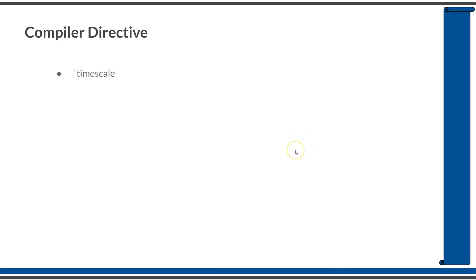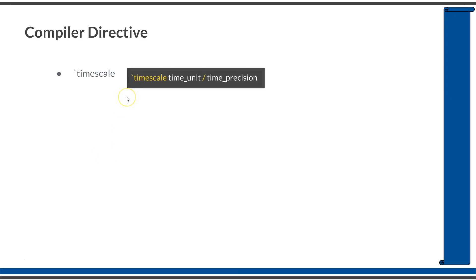The next directive is `timescale. The `timescale macro is used to specify the time unit and time precision in the current simulation. The time unit is the duration of a single simulation time step, and the time precision is the value to which every fractional time unit is rounded.